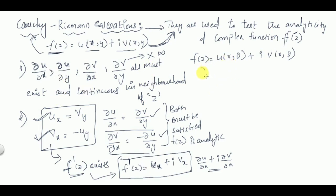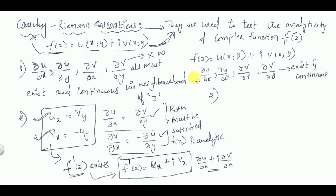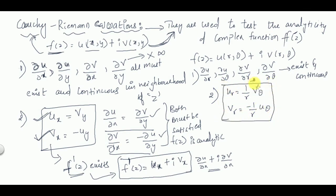Similarly, in polar form, ∂u/∂r, ∂u/∂θ, ∂v/∂r, and ∂v/∂θ must all exist and be continuous. The Cauchy-Riemann equations in polar form are: uᵣ = (1/r)·vθ and vᵣ = −(1/r)·uθ. That is, ∂u/∂r = (1/r)·∂v/∂θ and ∂v/∂r = −(1/r)·∂u/∂θ.